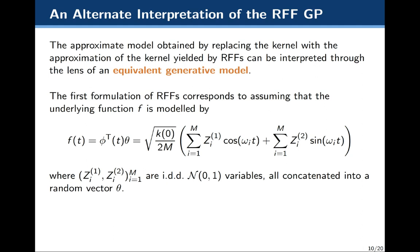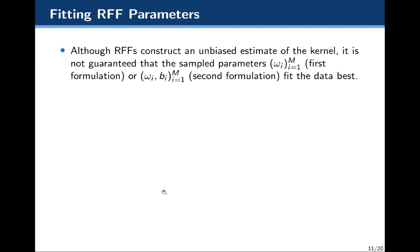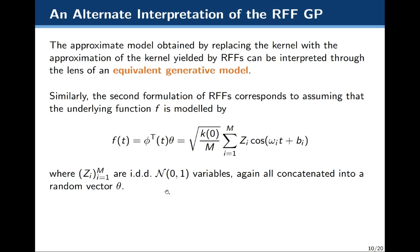The first formulation of RFFs corresponds to a specific equivalent generative model. Basically, we use parameters theta and take the inner product with phi transpose. We actually have a linear model where weights w_1 and w_2 are multiplied by cosine and sine features, and these are IID variables drawn from a zero-one Gaussian, concatenated into a random vector theta. If you look at the predictive distribution given by this linear model, you recover the exact predictive distribution of the Gaussian process with kernel defined by phi transpose phi.